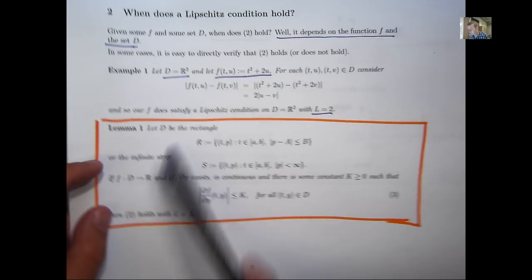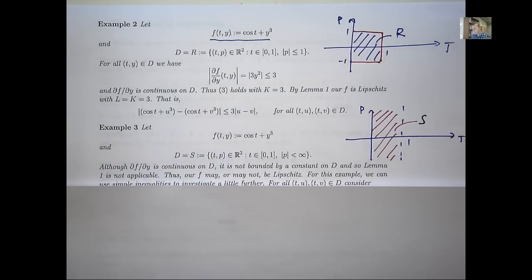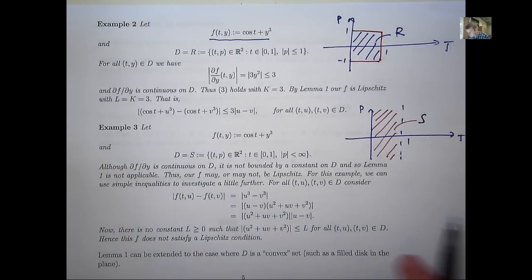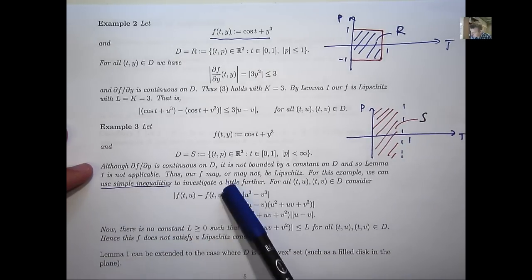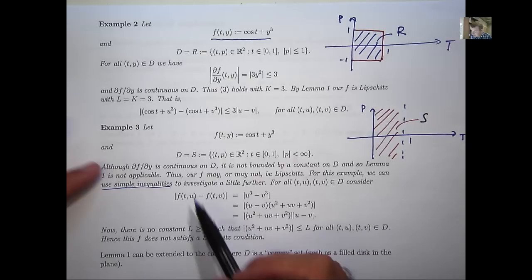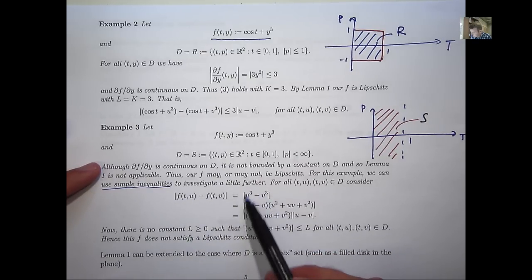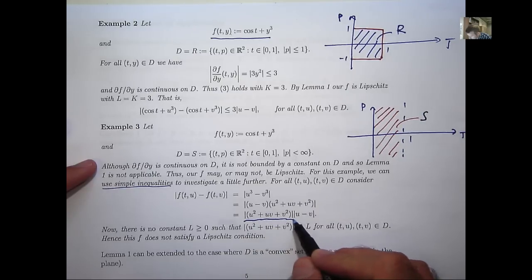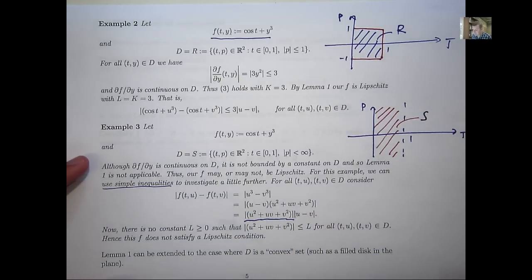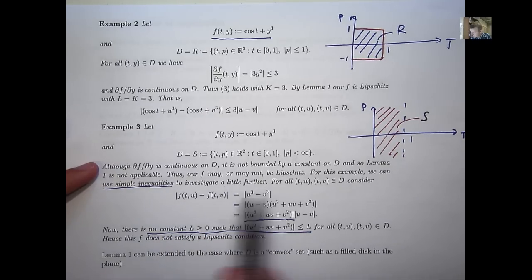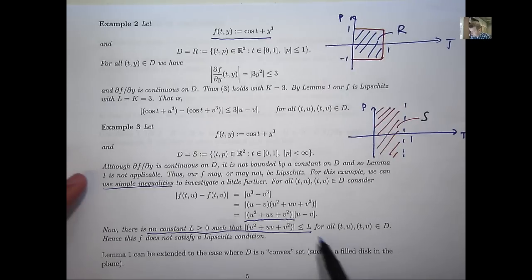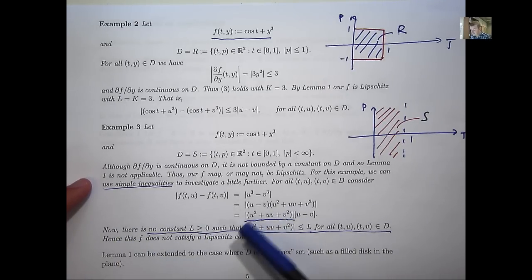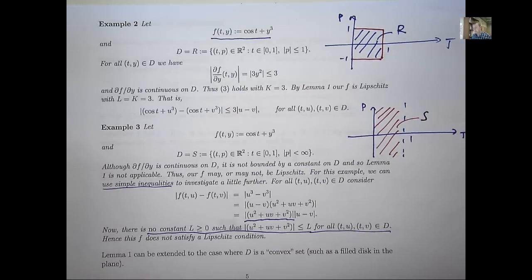So, what we've done is shown that all the conditions of lemma 1 hold with little a equals 0, little b equals 1, big A equals 0, big B equals 1, k equals 3. So, by lemma 1, our F is Lipschitz continuous on this set here. What about another example? In this example, I've kept the same function F, but I've changed the set D just to be this infinite strip. So, let me just draw a little picture of this infinite strip. So, essentially, it would just be this region here. So, the question now is, does this function satisfy Lipschitz's condition on this set? Well, we can try to apply lemma 1, but actually, it's not going to get us very far. And the reason is that although the partial derivative DFDY, again, is going to be 3Y squared, that's continuous and well-defined on the infinite strip, there's no k that bounds the derivative on this infinite strip. And the reason is because this strip is unbounded.